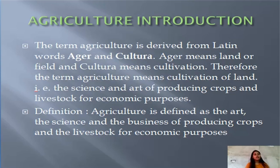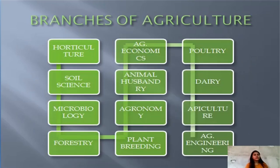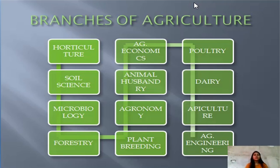We will further study about branches of agriculture. There are many branches of agriculture such as horticulture, soil science, microbiology, forestry, agricultural economics, animal husbandry, agronomy, plant breeding, poultry, dairy, apiculture, and agricultural engineering. I will explain the definition of all branches of agriculture studied in India.